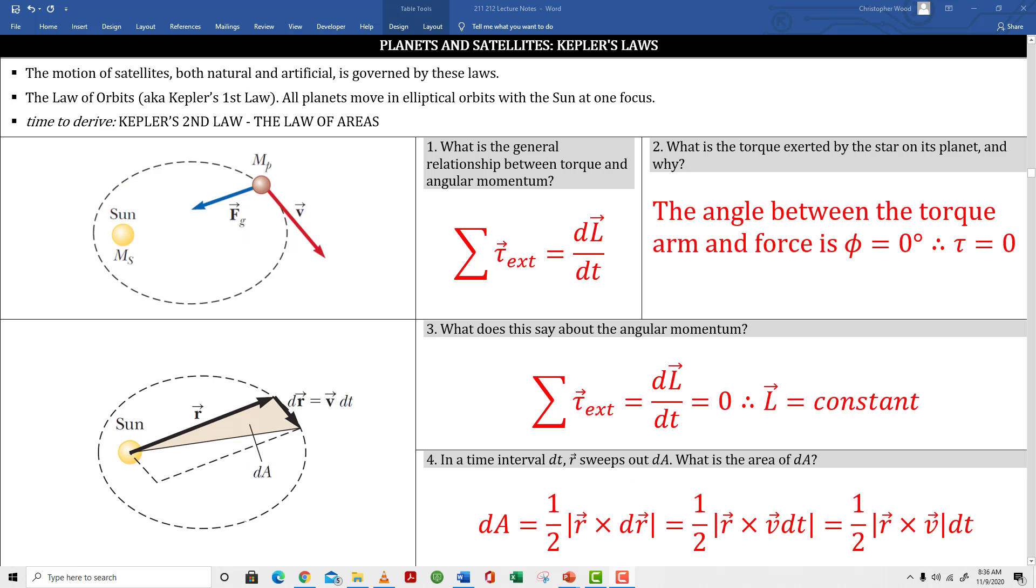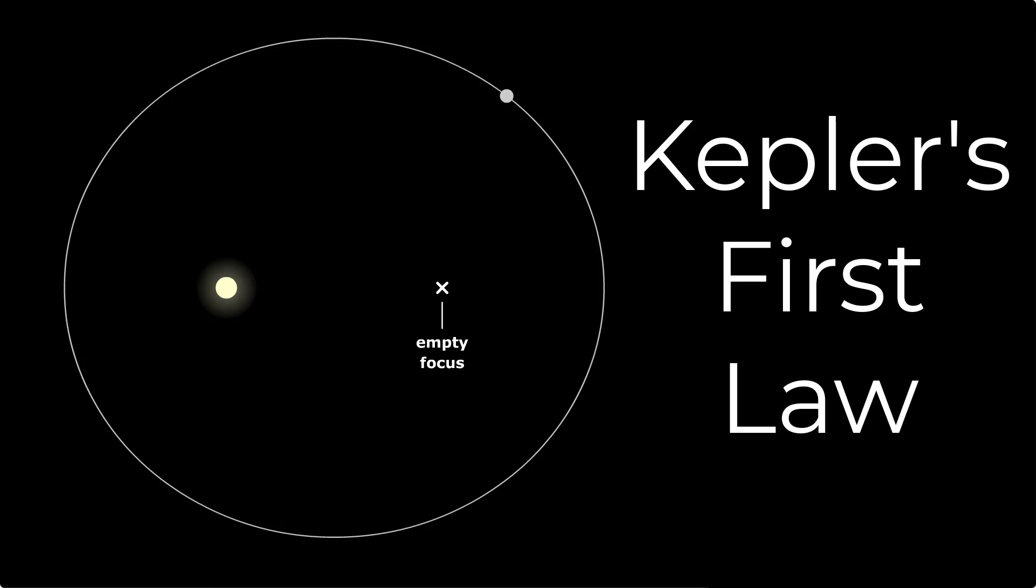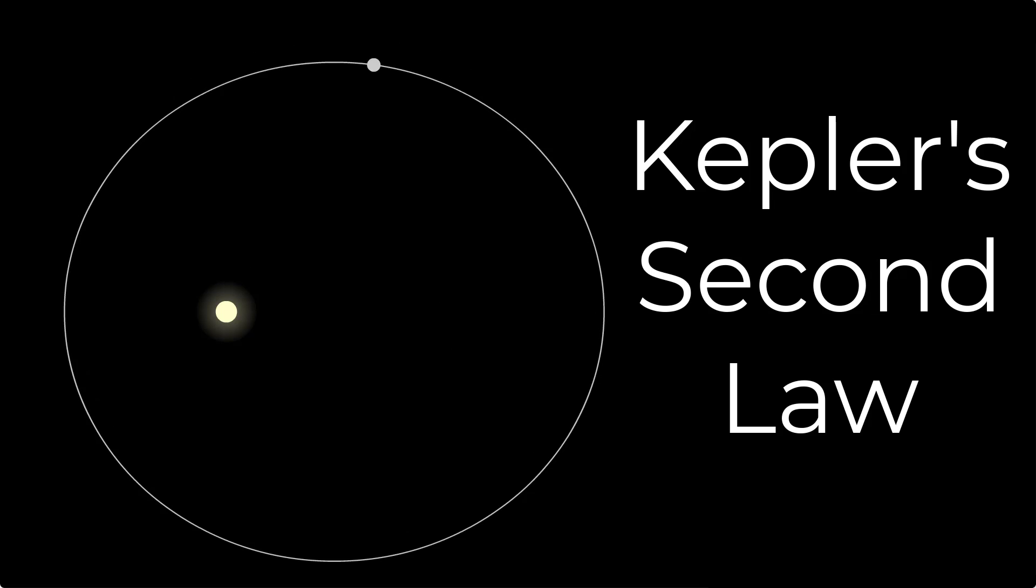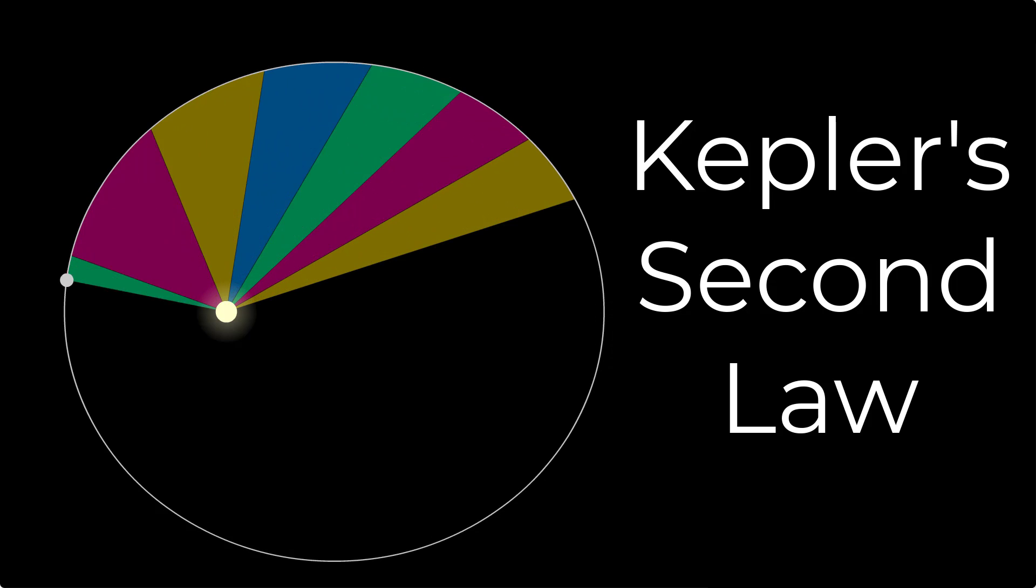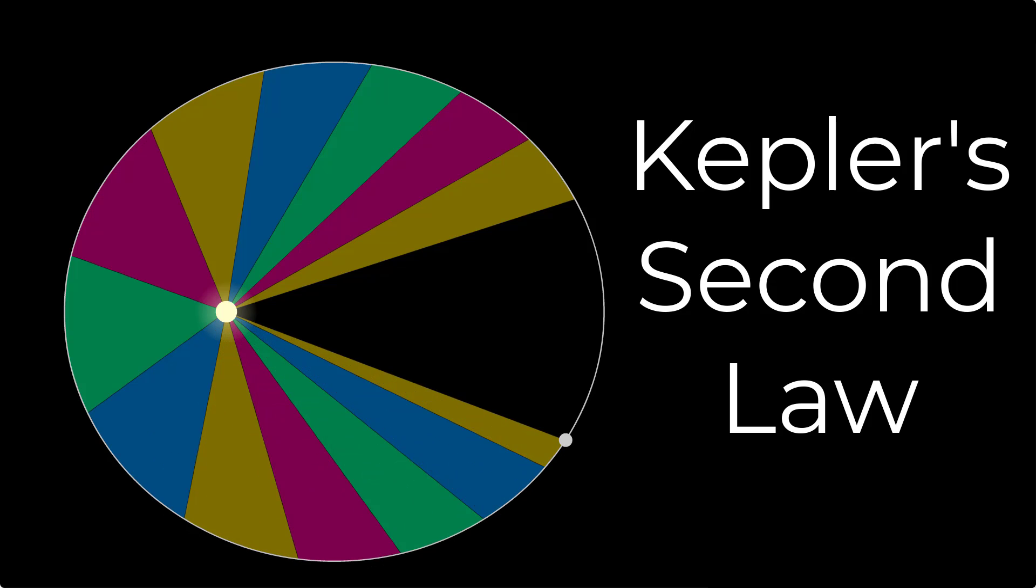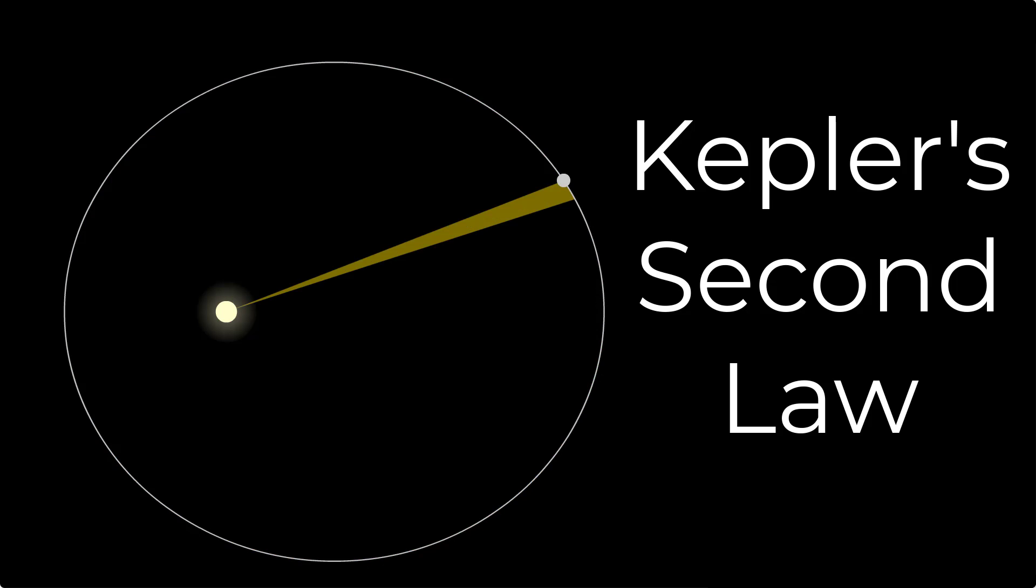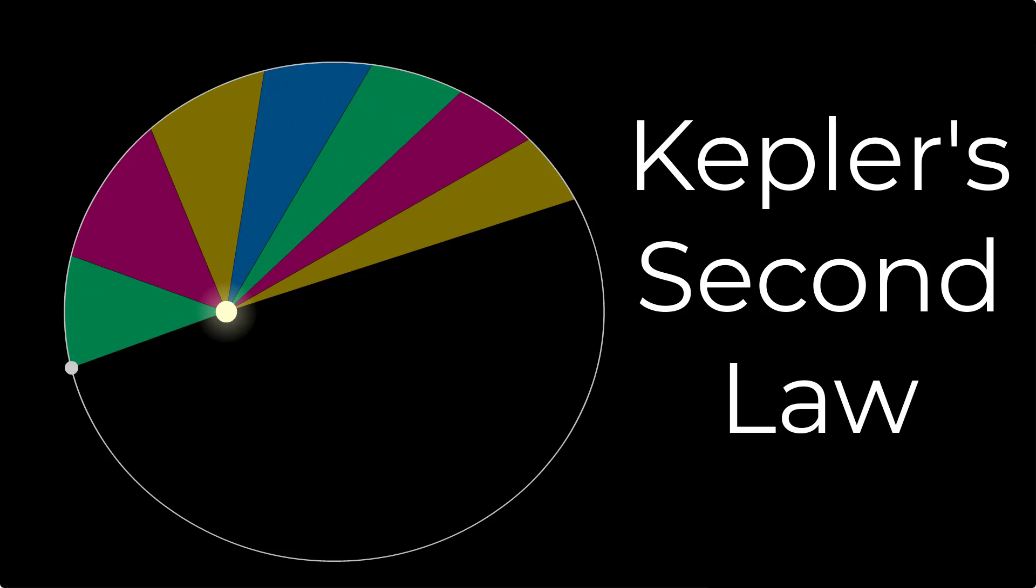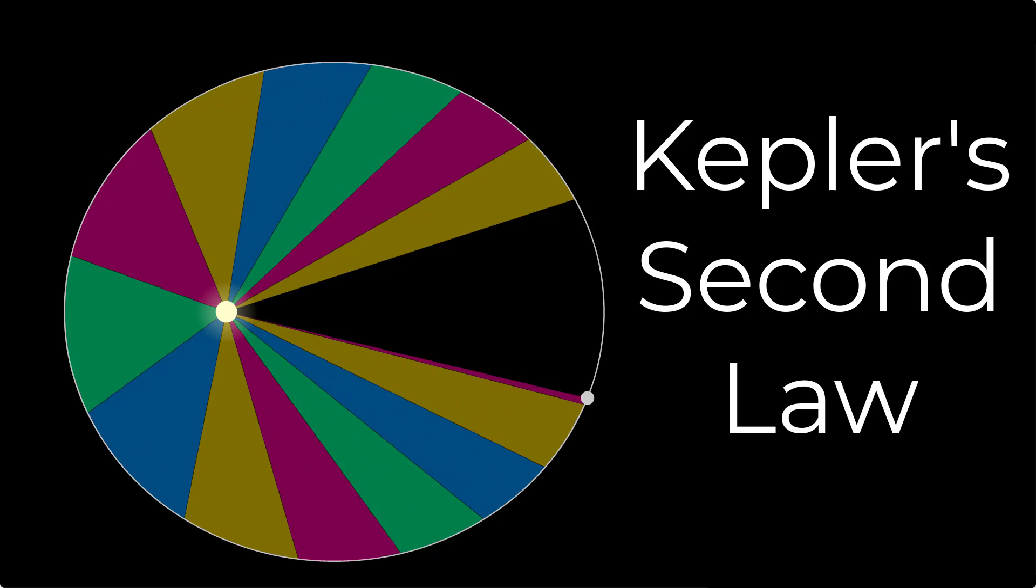Next section, Planets and Satellites, Kepler's Laws. This is Kepler's first law, which says all planetary orbits are ellipses with the sun at one focus. Here's Kepler's second law, which says a line segment joining a planet and the sun sweeps out equal areas during equal intervals of time. It basically says each of these pie slices you see are the same size, even though they have different shapes.